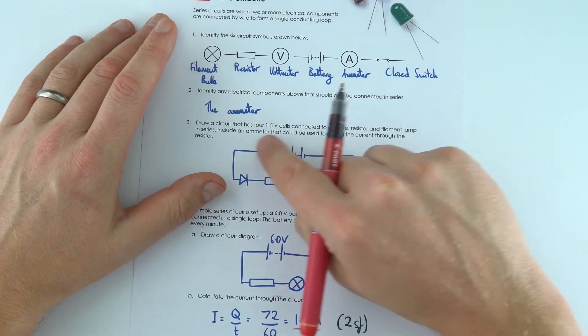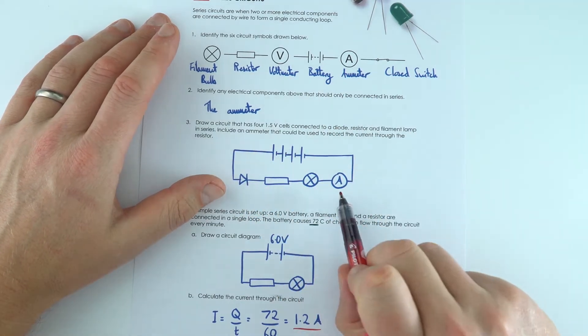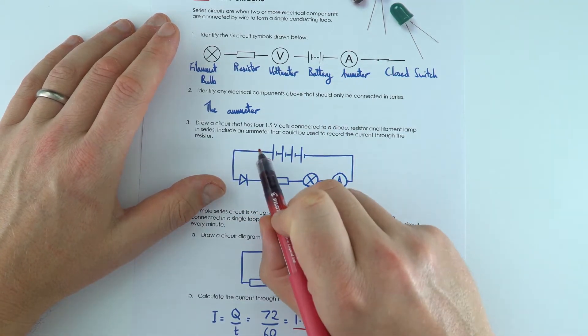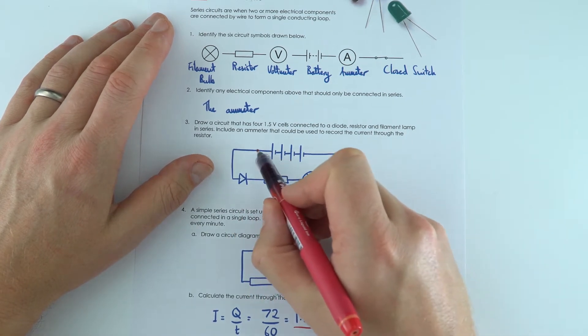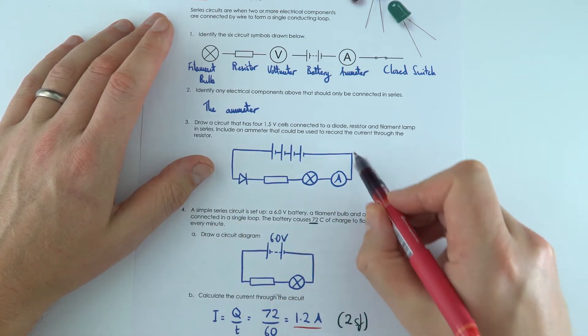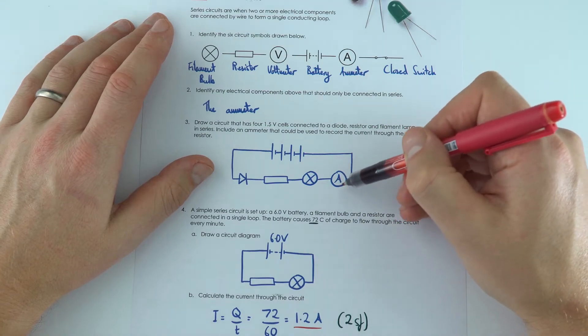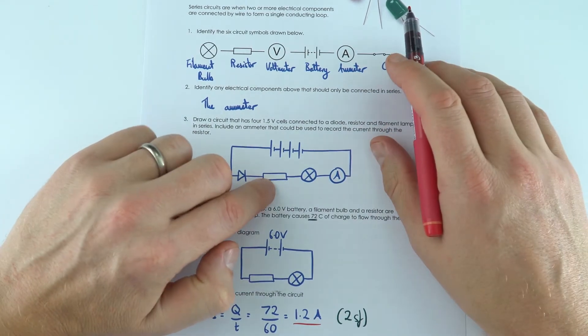This one here was just a case of drawing a circuit. It doesn't matter where you put the ammeter, it could be up here or up here or between these. In a series circuit we have the same current everywhere, and that means we can put the ammeter anywhere to measure the current that's actually going through that resistor.